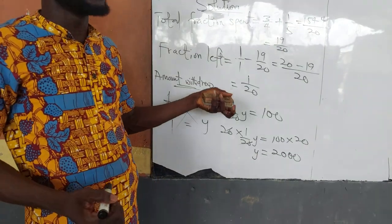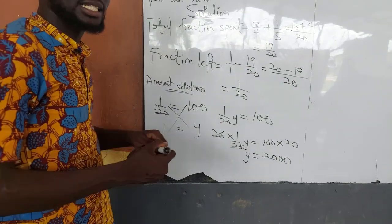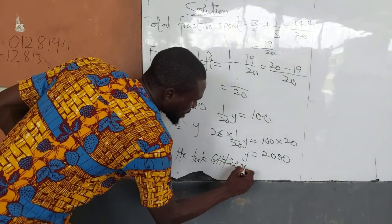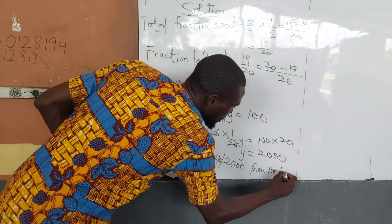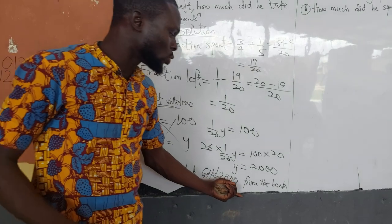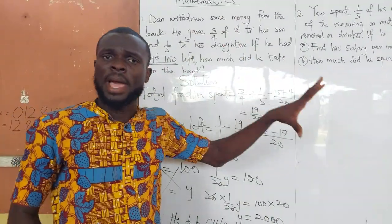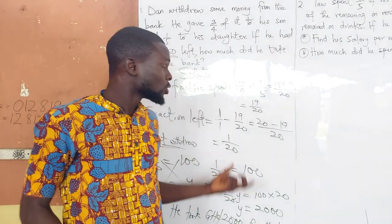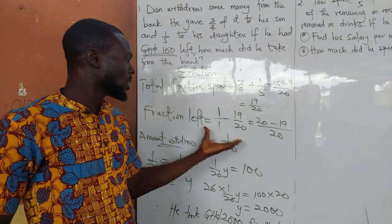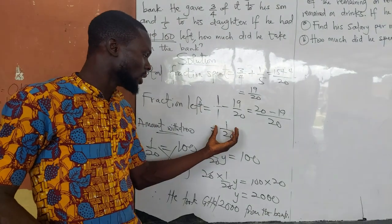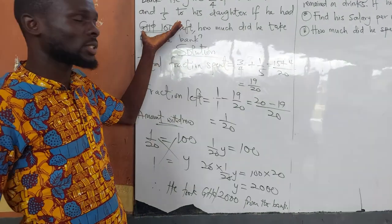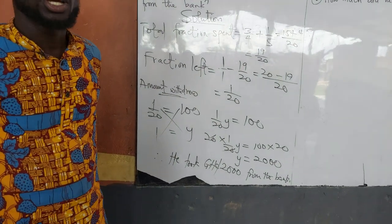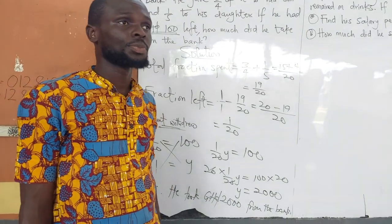So y is the amount he withdrew, and we've been asked to calculate the amount he took from the bank — therefore, he took 2,000 Ghana cedis from the bank. With this question, you notice there is no remainder. Since there is no remainder, you solve for the fraction spent, subtract it from the total fraction to know the fraction left, equate the amount left, then cross multiply to solve. The amount he took from the bank is 2,000 Ghana cedis.